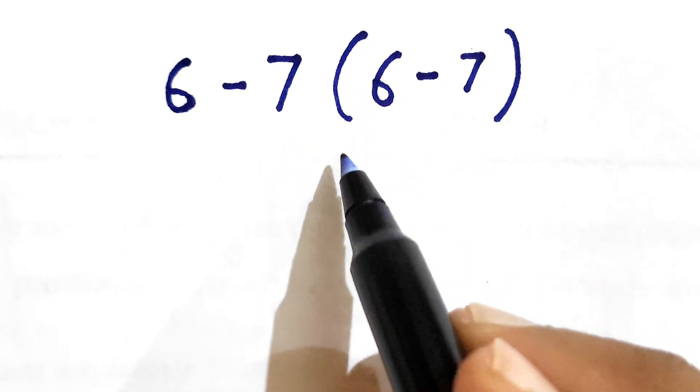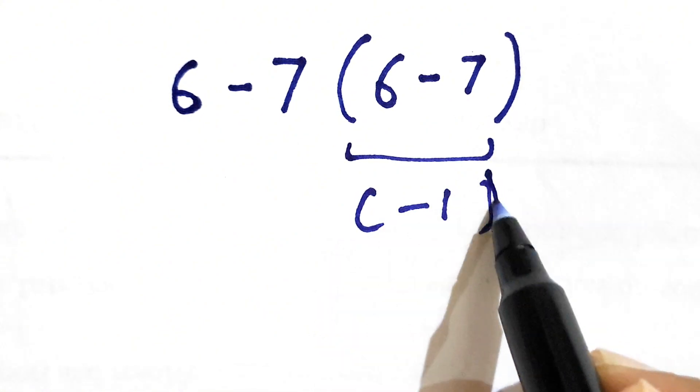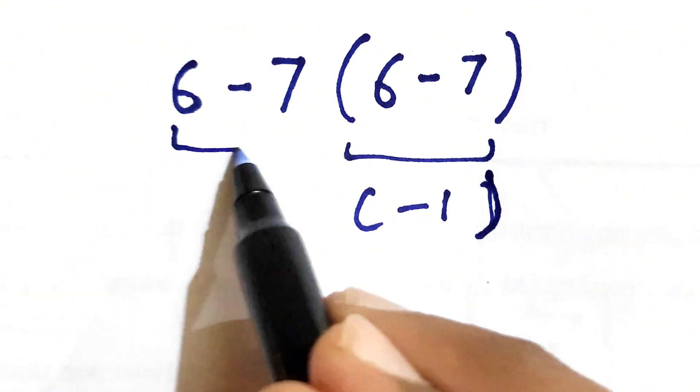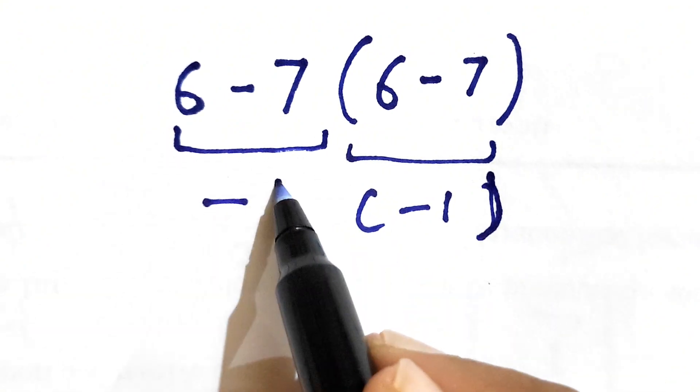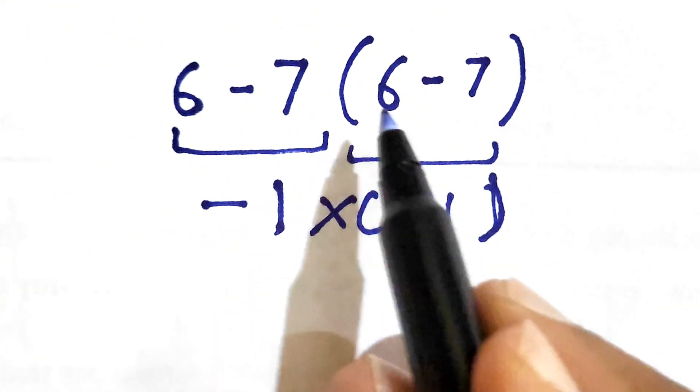6 minus 7 gives us negative 1 and this 6 minus 7 also gives us negative 1. Now negative 1 times negative 1, that is multiplication.